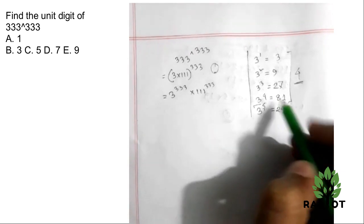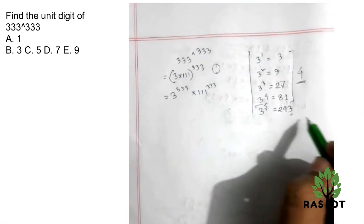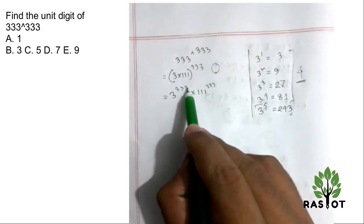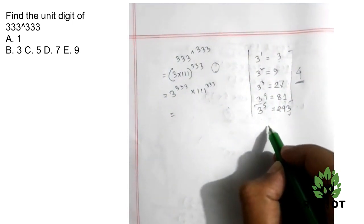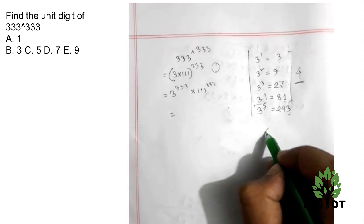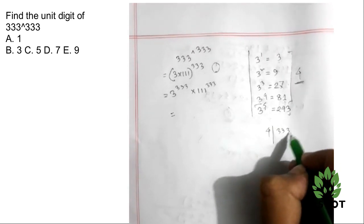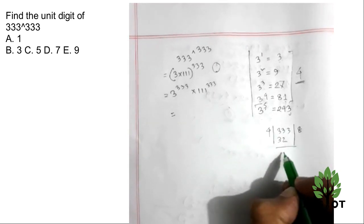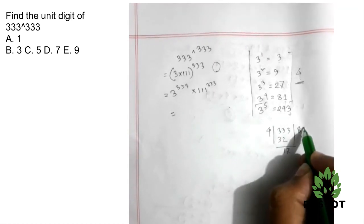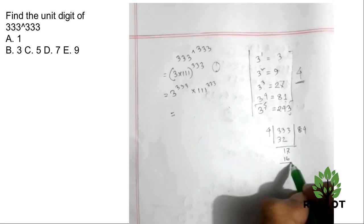Now we divide 333 by 4. 333 divided by 4 gives us 83 with remainder 1.